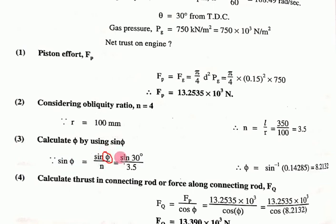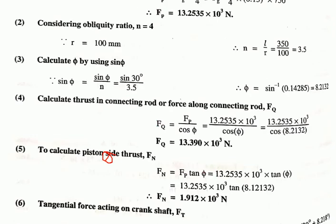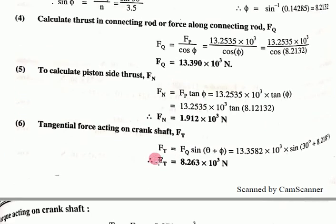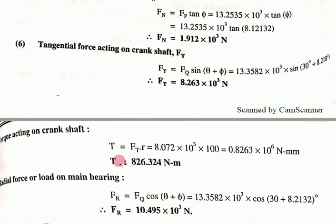Calculate Fp, then sin θ/n gives φ, and the obliquity ratio. Then find piston effort and all the forces: Fq, Fn, and Ft. These are all the same equations as the first example.